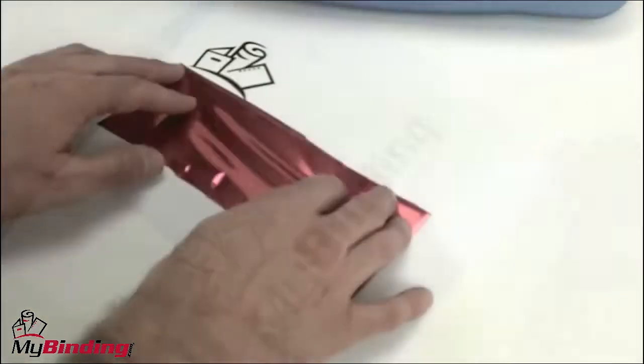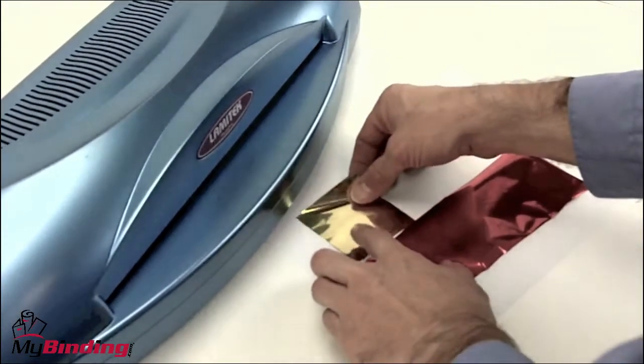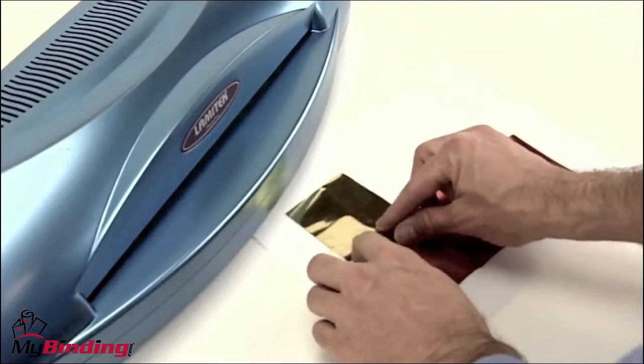It is foil and color embossed. And for a different look, you can try multiple colors. Simply cut smaller pieces and place them over the designs you want in different colors.